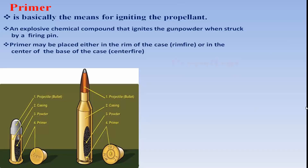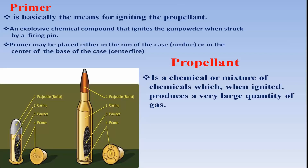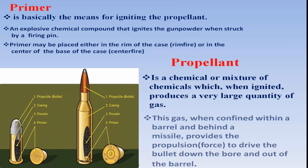What is propellant? Propellant is a chemical or a mixture of chemicals which, when ignited, produces a very large quantity of gas. This gas, when confined within the barrel behind a missile, provides the force to drive the bullet down the bore and out of the barrel.